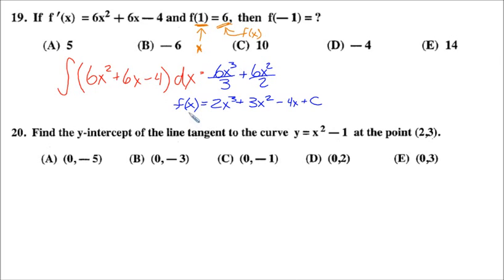We get 6 equals 2 times, and the beauty of x being 1, we have 1 raised to the third power, which is really just 1. So this term evaluates to just 2 plus 3 times 1², so that's just 3. We have minus 4 times 1, so that's just -4, plus c.